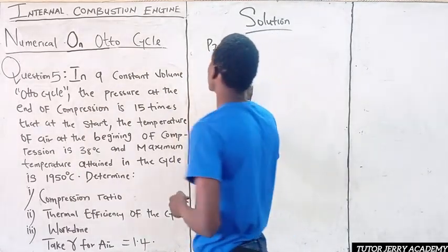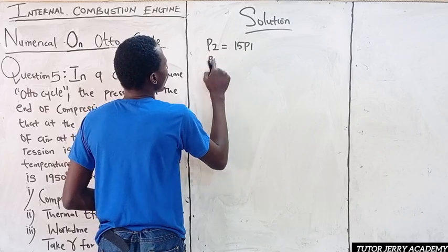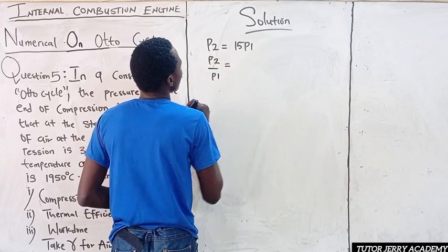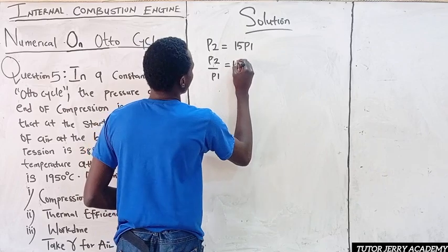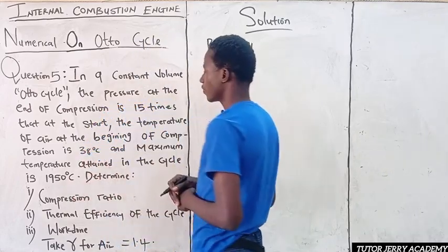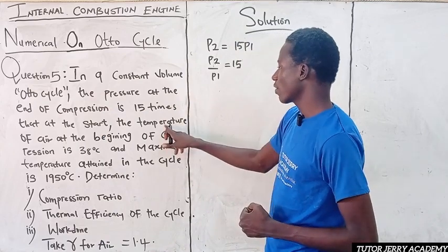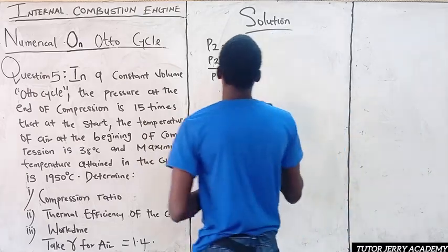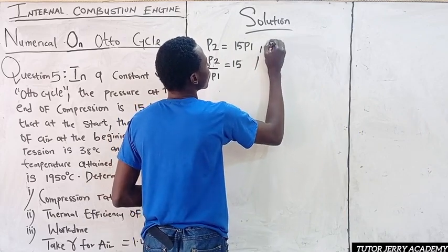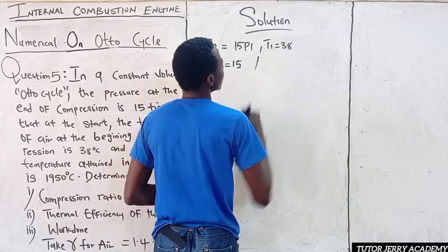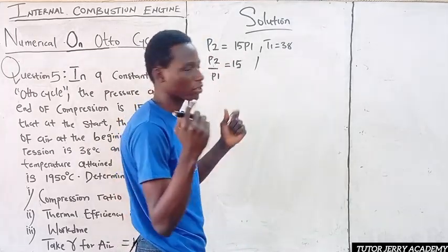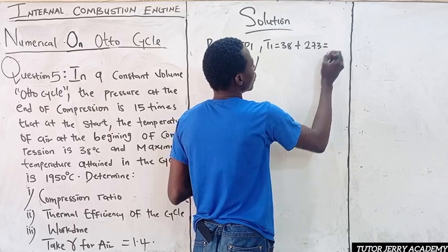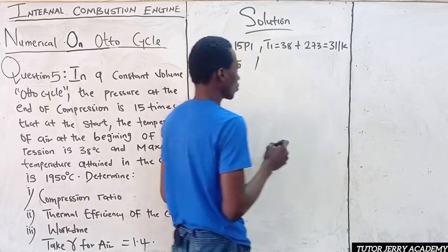So we can rewrite this as P2 over P1 equals 15. Next, the temperature of air at the beginning of compression is 38 degrees Celsius, so T1 equals 38 degrees Celsius. Working in Kelvin, that is 38 plus 273, which equals 311 Kelvin.